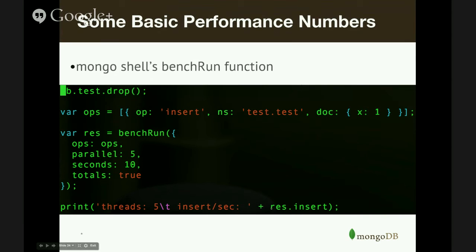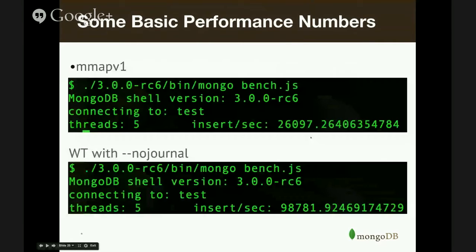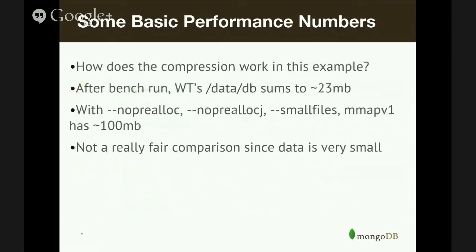With MMAP v1, the numbers aren't particularly great. But with WiredTiger and --nojournal, you get about four times as many inserts per second — which is pretty awesome. Compression is also one of the important core features of WiredTiger. After this benchmark, the WiredTiger DB path sums to about 23 megabytes. Whereas if you do the same thing with MMAP v1, even with flags to prevent extra data allocation, MMAP v1 still uses about 100 megabytes of space. The data is very small so it's not a perfectly fair comparison, but it shows WiredTiger is more efficient in terms of disk space as well as providing faster write throughput.